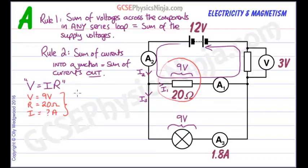So let's put the numbers in using V equals IR. 9 equals I, that would be I1, multiplied by 20. So therefore I1 is equal to 9 divided by 20 which equals 0.45 amps. We have worked out I1 brilliant, so that's 0.45 amps.